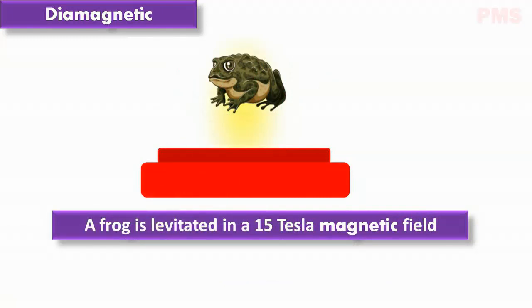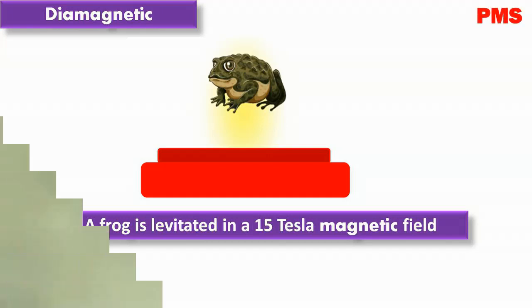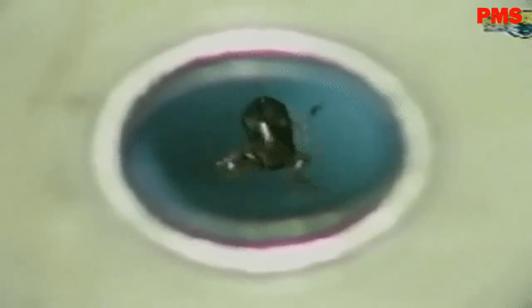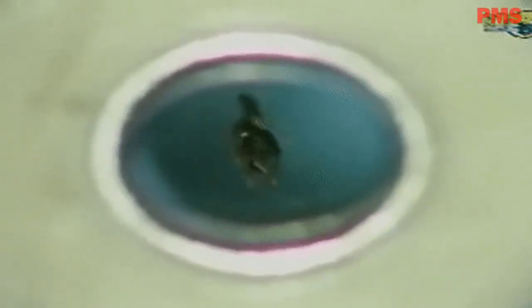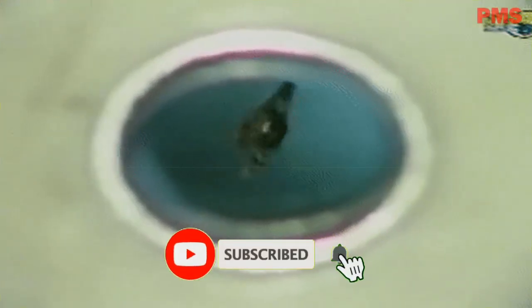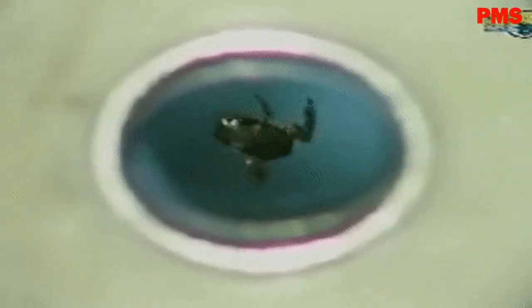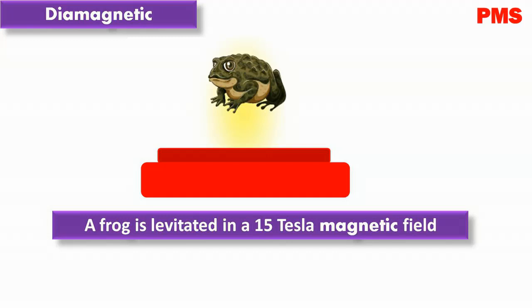The frog is diamagnetic. When the frog was placed in the diverging magnetic field near the top end of a vertical current-carrying solenoid, every atom in the frog was pushed upward, away from the region of strong magnetic field at the end of the solenoid. The frog moved upward into weaker and weaker magnetic field until the upward magnetic force balanced the gravitational force, and there it hung in mid-air. The frog is not in discomfort because every atom is subjected to the same forces, so there is no force variation within the frog — the sensation is similar to the weightlessness of floating in water. If we went to the expense of building a much larger solenoid, we could similarly levitate a person in mid-air due to diamagnetism.